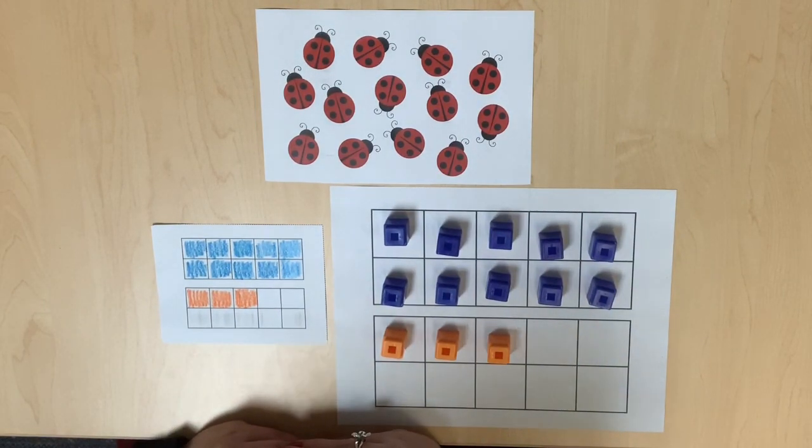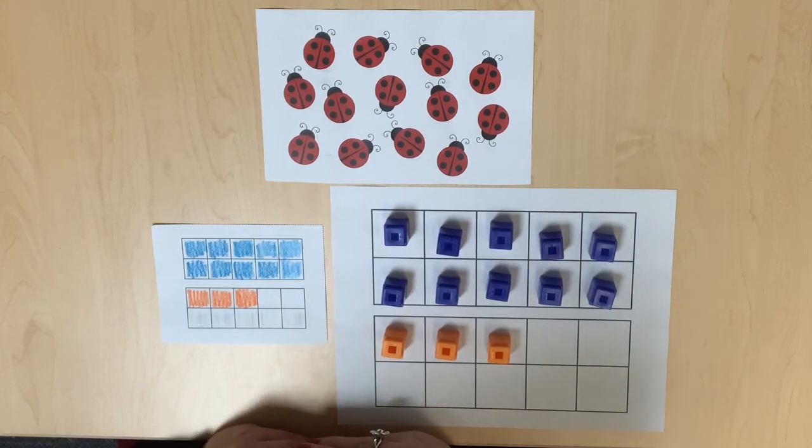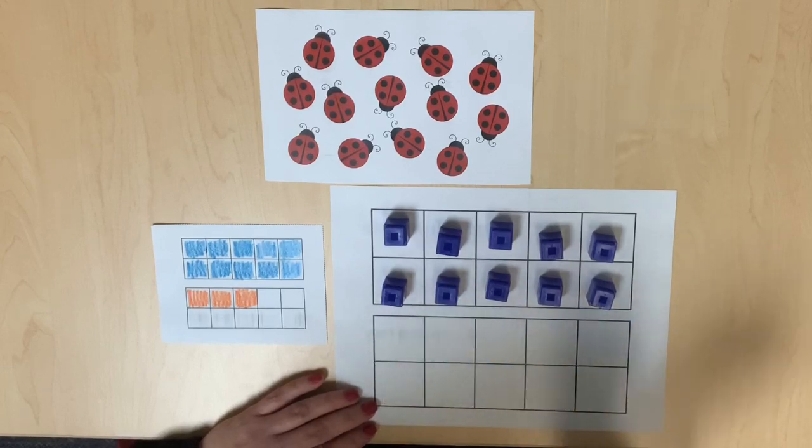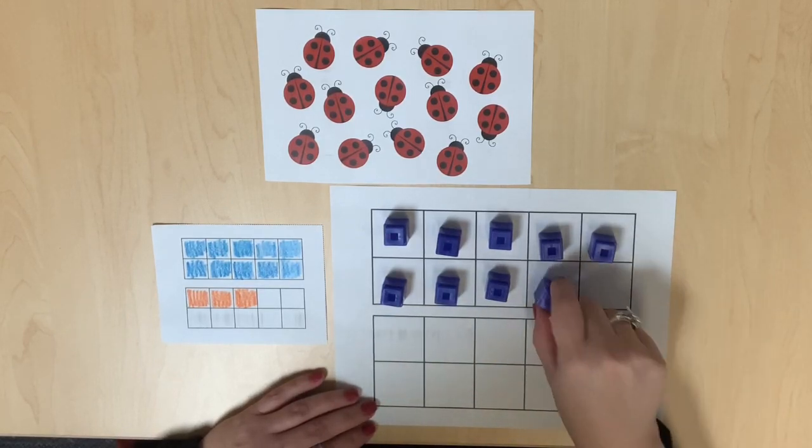Incorporate counting backward by using the counters and removing them one at a time: thirteen, twelve, eleven, ten, nine, eight, etc.